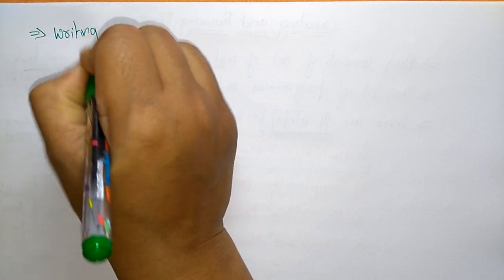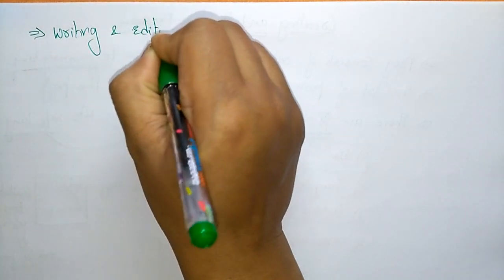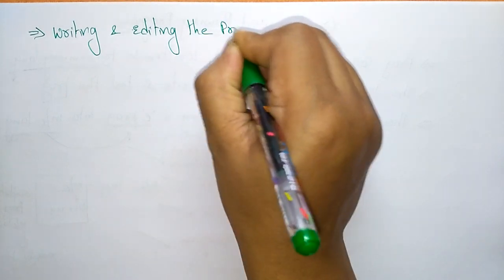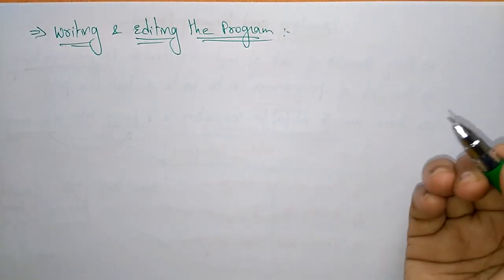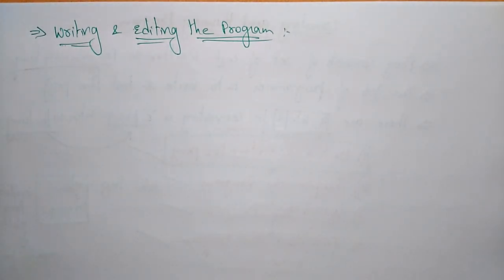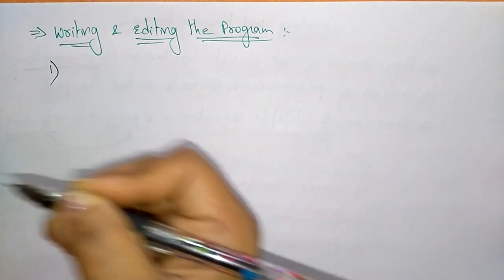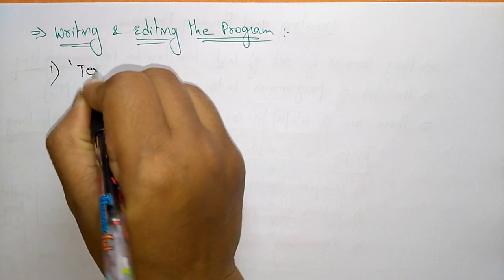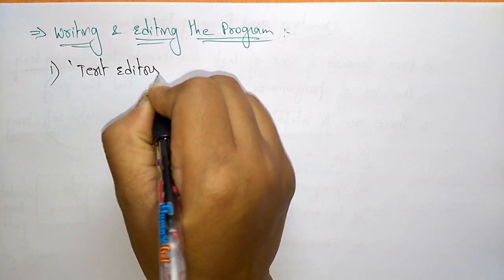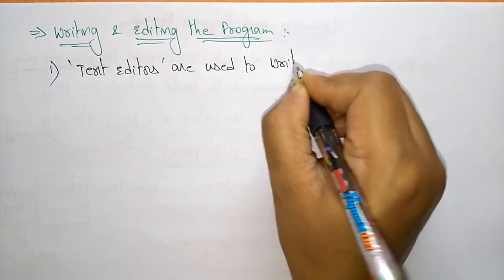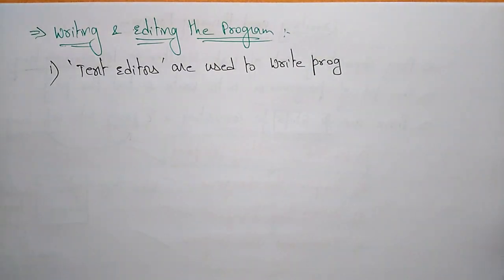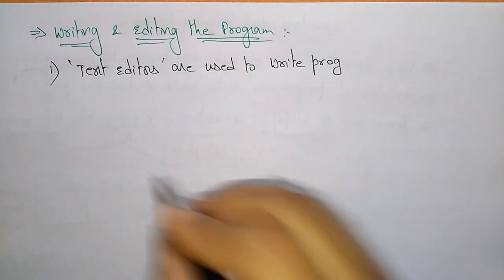Let us discuss each step one by one. The first step is writing and editing the program. For this, you use a text editor. Text editors are used to write the program. You open a text editor, write the program there, and then edit it as needed.